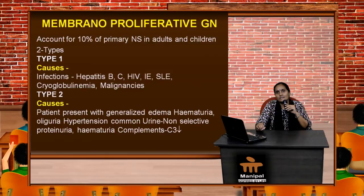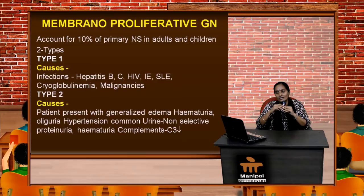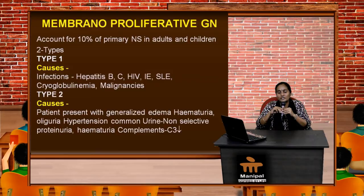Membranoproliferative glomerulonephritis shows more disease progression and greater involvement of glomeruli, making it a more serious type. It accounts for 10% of primary nephrotic syndrome in both adults and children, and is classified as Type 1 and Type 2. Type 1 etiology includes infections — most of which are preventable or treatable — such as hepatitis B, hepatitis C, HIV, and infective endocarditis. Non-infectious causes include systemic lupus erythematosus, cryoglobulinemia, and certain neoplasms.